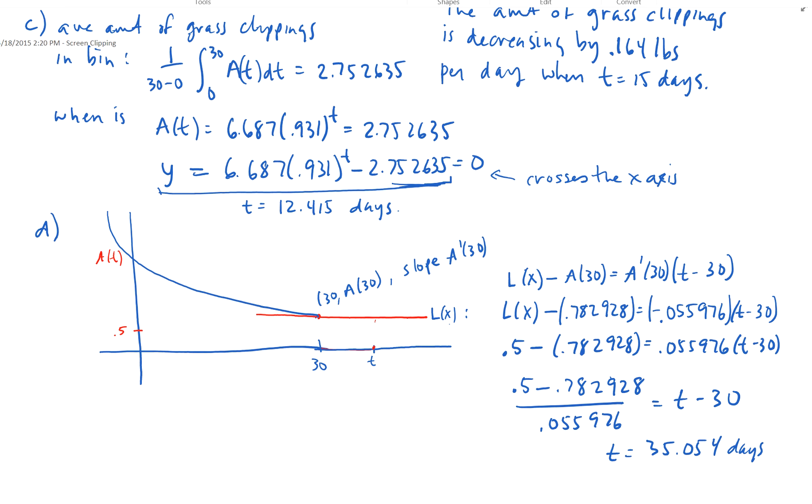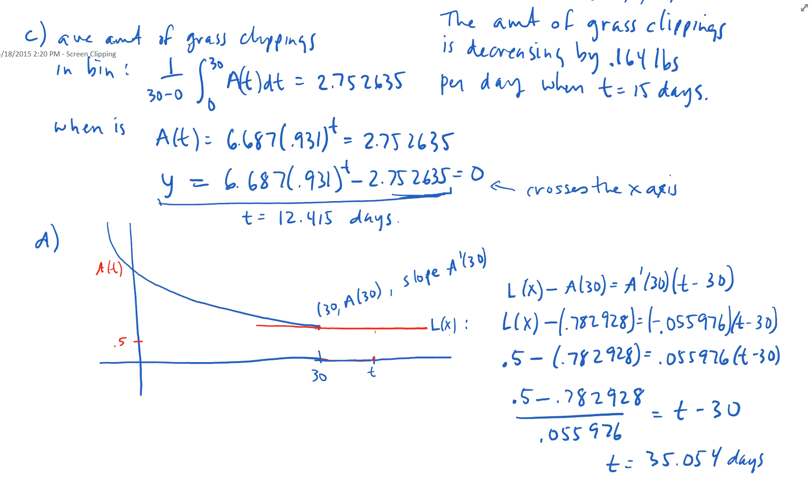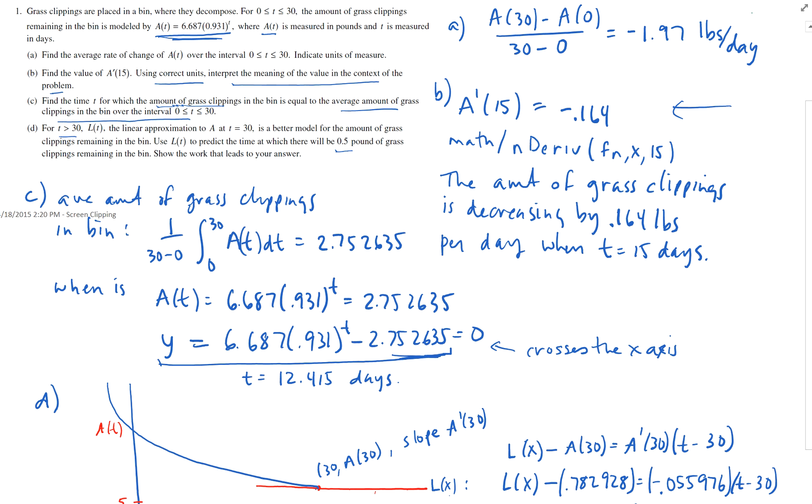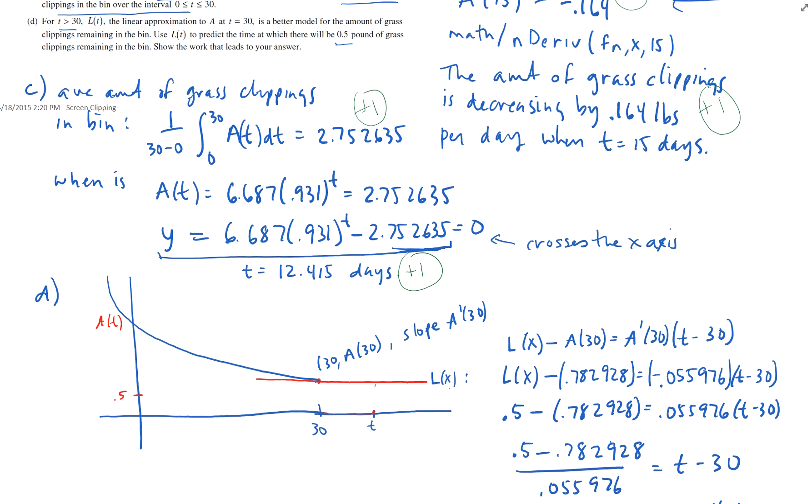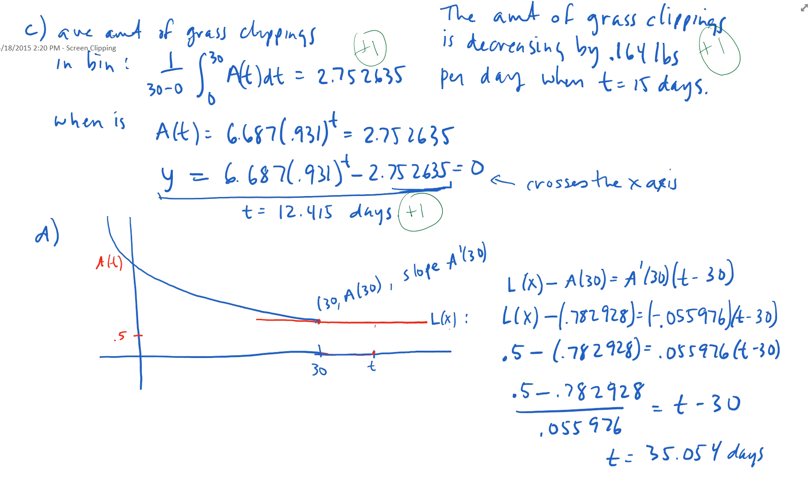Now, let me go ahead and just give you the grading rubric. For part A, it's plus 1 if you get the answer with the units. For part B, it's plus 1 for the answer, plus 1 for the interpretation. For part C, it's plus 1 for the average value, and then it's plus 1 for this answer. So far, it's 5 points, and then part D is worth 4. So you get 2 points for writing this equation here for linearization, and then you get 1 point for plugging in 0.5, and then 1 point for the answer. So there you have it.